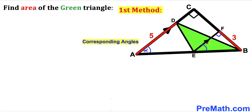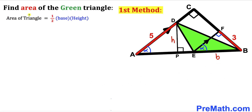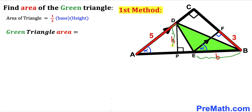If this angle is alpha, then this corresponding angle is alpha as well. I've dropped a perpendicular from D to line AB and labeled it lowercase h, and labeled the length EB as lowercase b. Recall the area formula: area equals one-half times base times height. The area of triangle DEB equals b times h divided by 2.